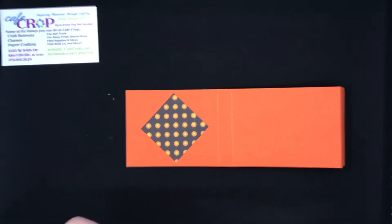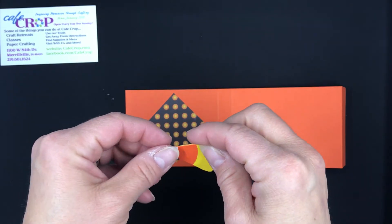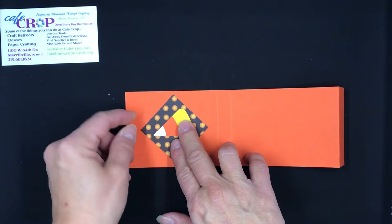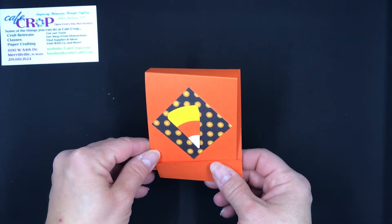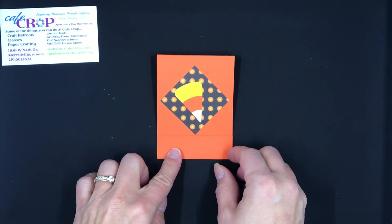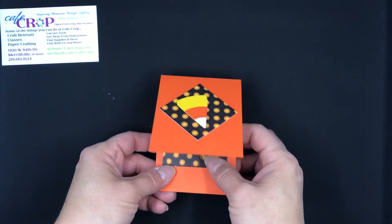And then I'm just going to take my little piece of candy corn. If you want to know how to make the candy corn, one of our previous YouTube videos has all of that information in there. And I've got my matchbook almost completed.